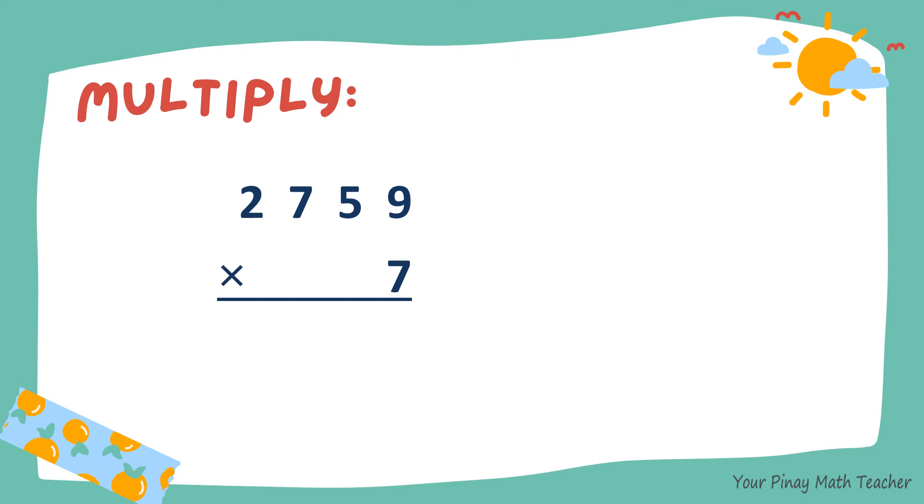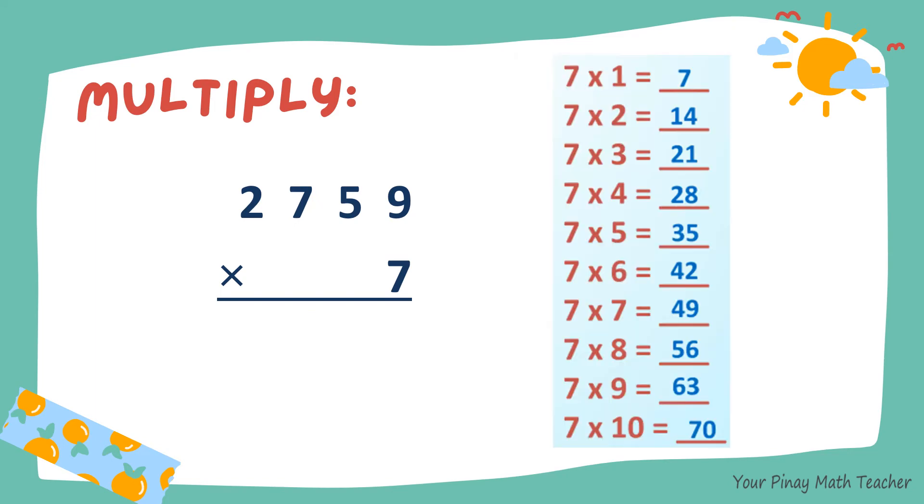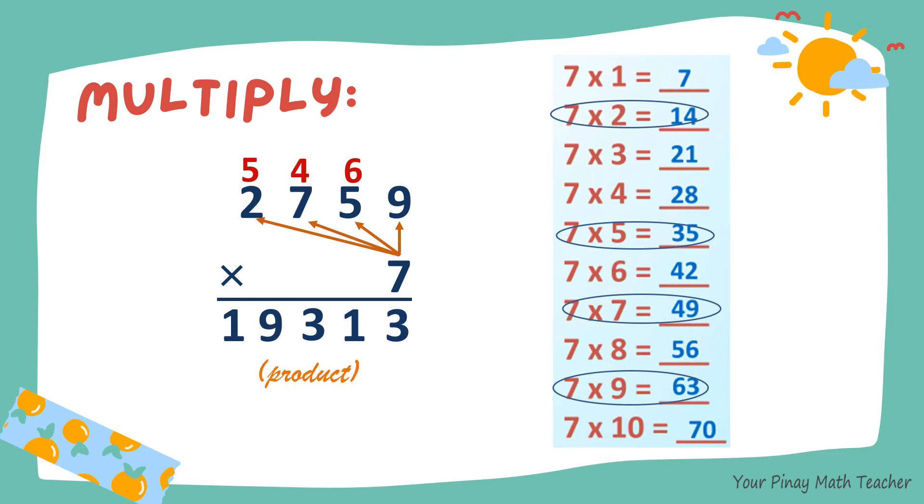2,759 times 7. 7 times 9 is 63. 7 times 5 is 35. 35 plus 6 is 41. 7 times 7 is 49. Plus 4, 53. And 7 times 2 is 14. Plus 5, 19. So the product is 19,313.